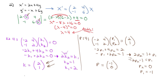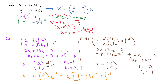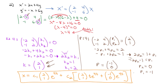Putting it all together: x equals c1 times eigenvector [2, 1] times e to the 4t, plus c2 times eigenvector [2, 1] times t e to the 4t, plus p vector [-1, 0] times e to the 4t. This is the solution to the system. We make a minor adjustment to our process when we have a double root or repeated eigenvalue. Now it's your turn — go ahead and look at the assignment. Good luck.